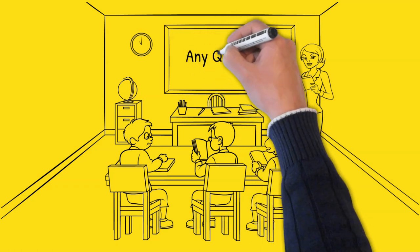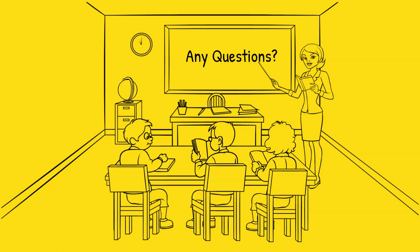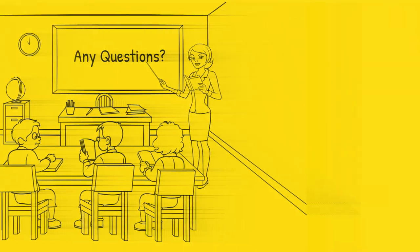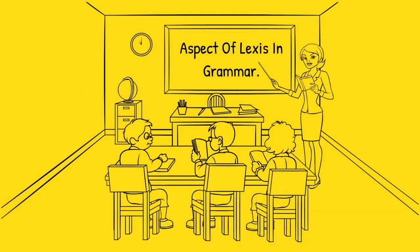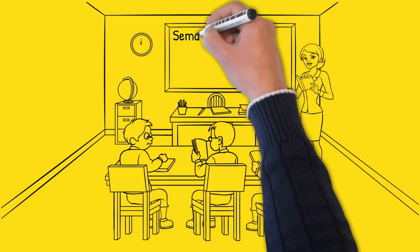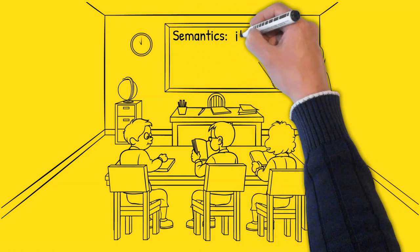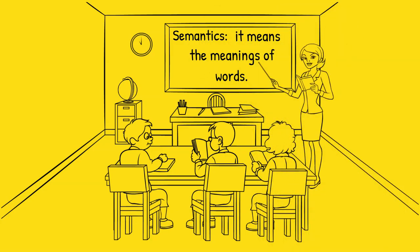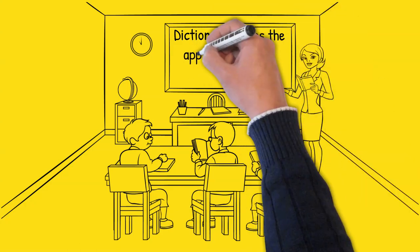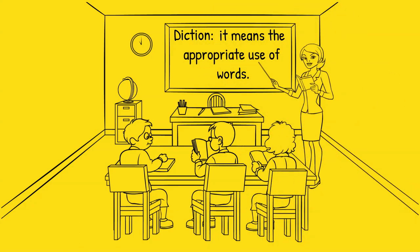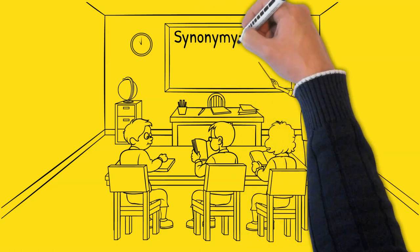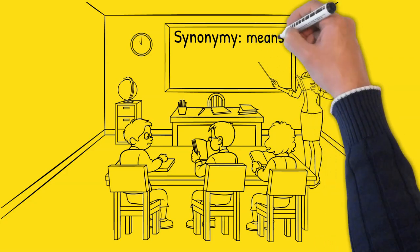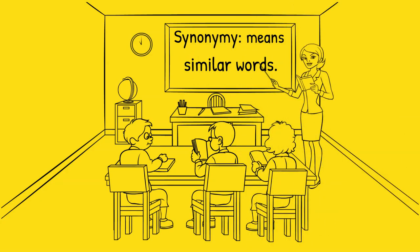Do you have any question on lexical items? Please ask in the comment section. Aspects of lexis and grammar: A — semantics, which means the meaning of words. B — diction, which means the appropriate use of words, that is, the most appropriate words. C — synonym, which means similar words, that is, nearest in meaning.